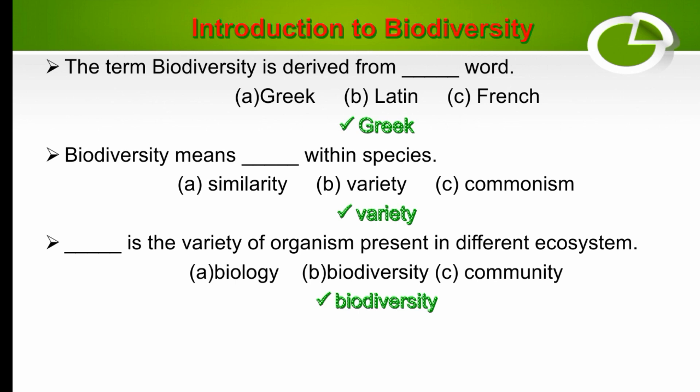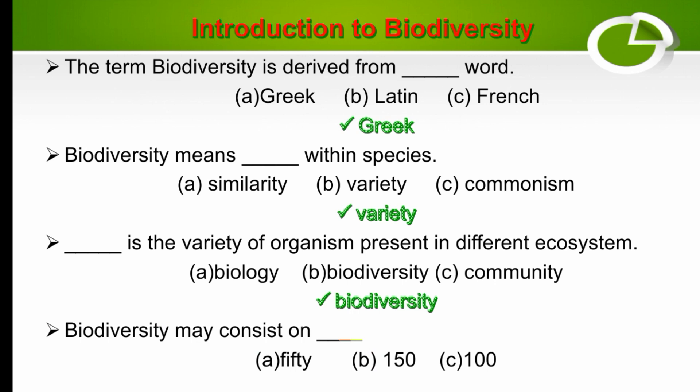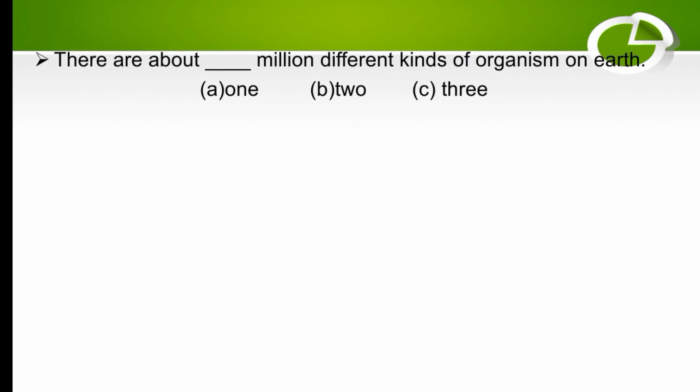The next MCQ: biodiversity may consist of how many million kinds of organisms on Earth — 50 million, 150 million, or 100 million? Biodiversity may consist of 100 million kinds of organisms on this planet. Next MCQ: there are about how many million different kinds of organisms on Earth — one, two, or three?